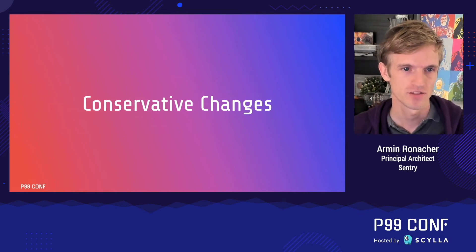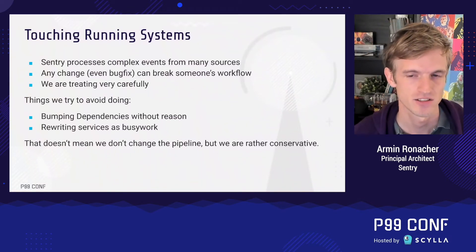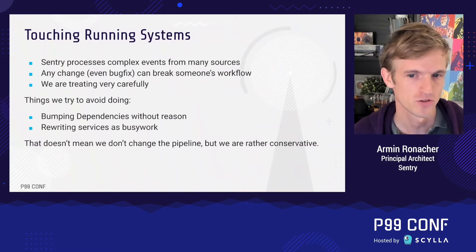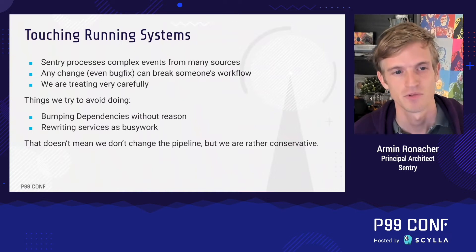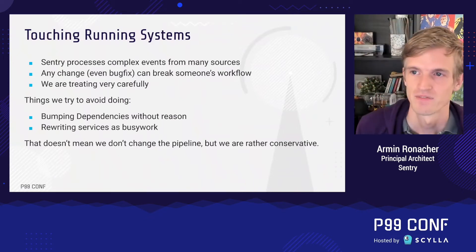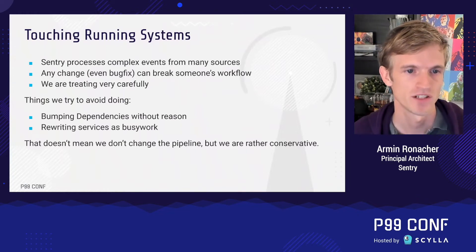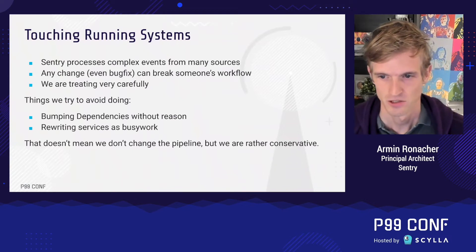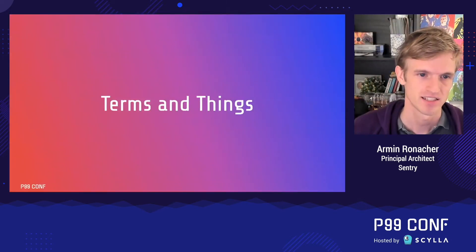As a company we're quite conservative about changes to the processing pipeline. The data we receive has high variance not just in processing time but also in sources — we control our own SDKs tightly, but we also integrate into third-party crash reporting systems like the Unreal Engine and accept events from customer-written clients. Because of the complexity of the event protocol and the variance of inputs, more fundamental changes require care, as touching the pipeline in fundamental ways tends to surface unexpected issues.